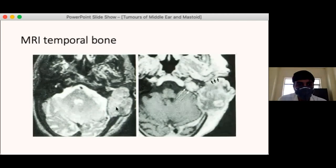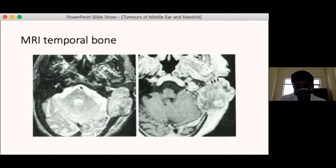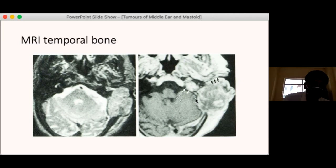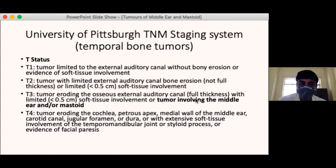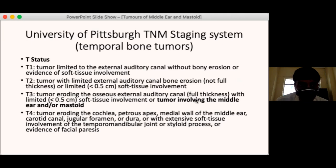MRI is important for assessing the surrounding structures, dural involvement, and soft tissue spread — such as through the eustachian tube into the nasopharynx. Temporal bone malignancies are classified using the University of Pittsburgh TNM staging system, since these tumours are too rare to be formally classified in the AJCC classification. Based on tumour size, location, nodal involvement, and metastasis, we can determine prognosis and treatment plan.